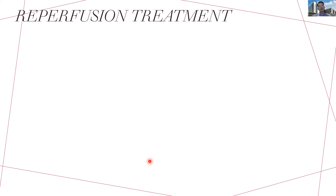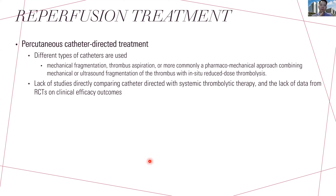Another reperfusion option is percutaneous catheter-directed treatment, requiring an experienced interventional radiologist. Via a femoral vein approach, they navigate through the thrombus area and can deliver urokinase locally or use mechanical thrombolysis. Even experienced interventional radiologists will want a cardiothoracic surgeon on standby. If the patient collapses on the table, open surgical thrombectomy can be performed.